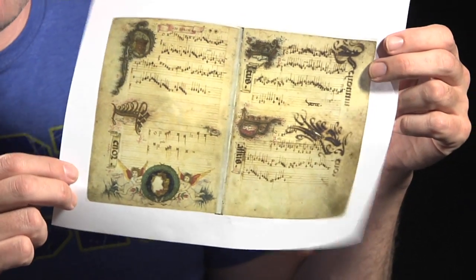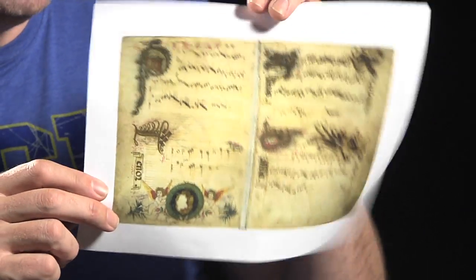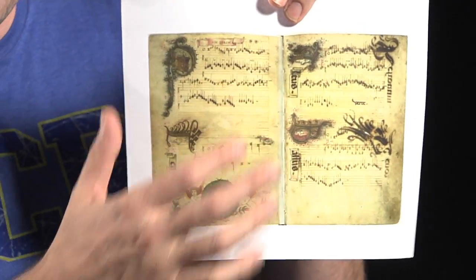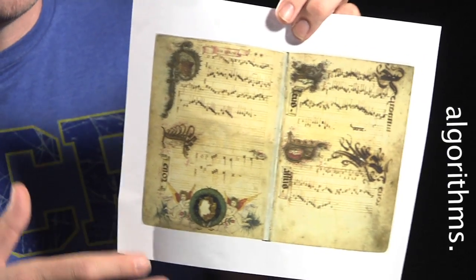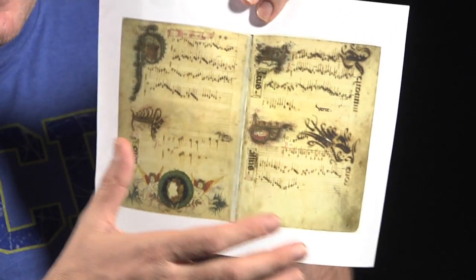But let me show you something more interesting and complex. This is a copy of a 16th century piece of music and the format here is not well understood. The question is can we have algorithms that can look at pages of these and actually produce the music that was originally intended.